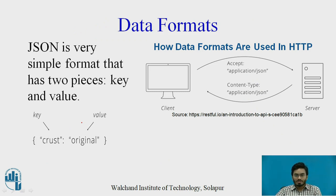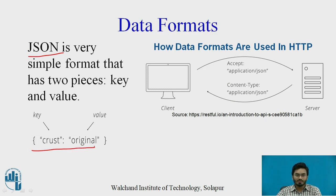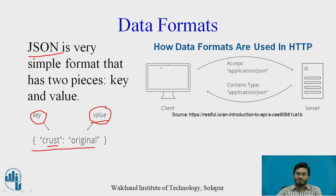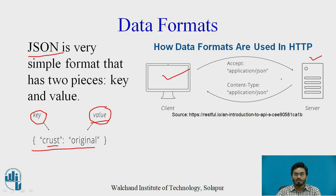Before proceeding ahead, let's have a quick example of how JSON appears. JSON stands for JavaScript Object Notation, which is a very simple notation — it has just two things: the first one being the key and the second one being the value. For example, if I am talking about the type of pizza I'm trying to order, then the key is going to be 'crust,' which indicates the type of crust I'm ordering, and the value is what kind of crust I'm expecting — for example, I want an original crust based pizza.